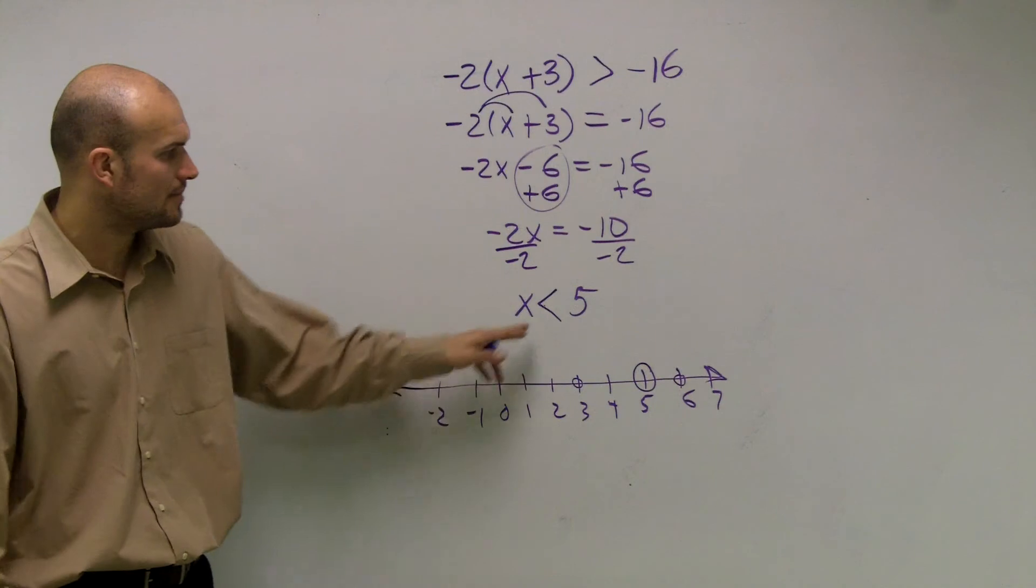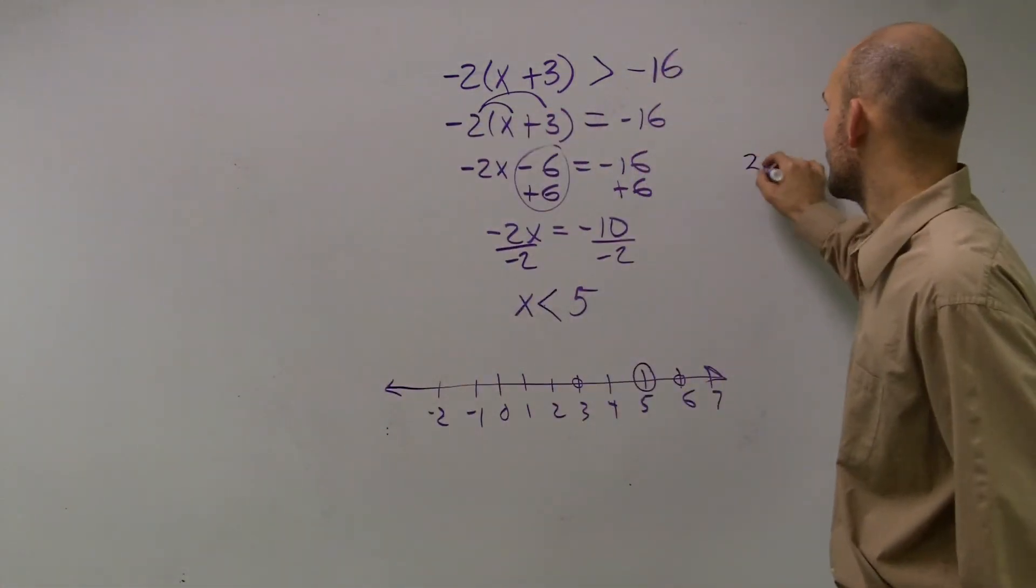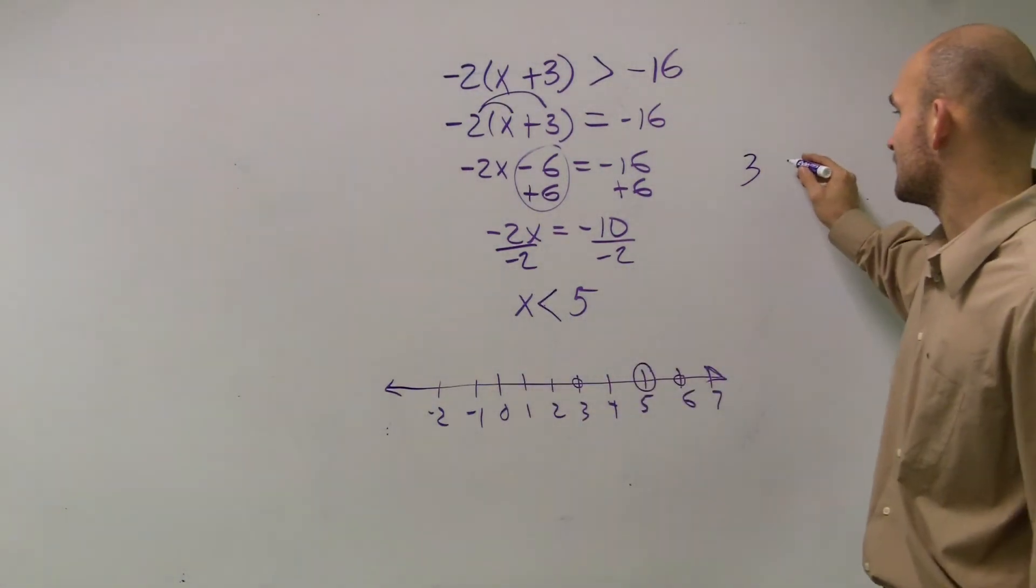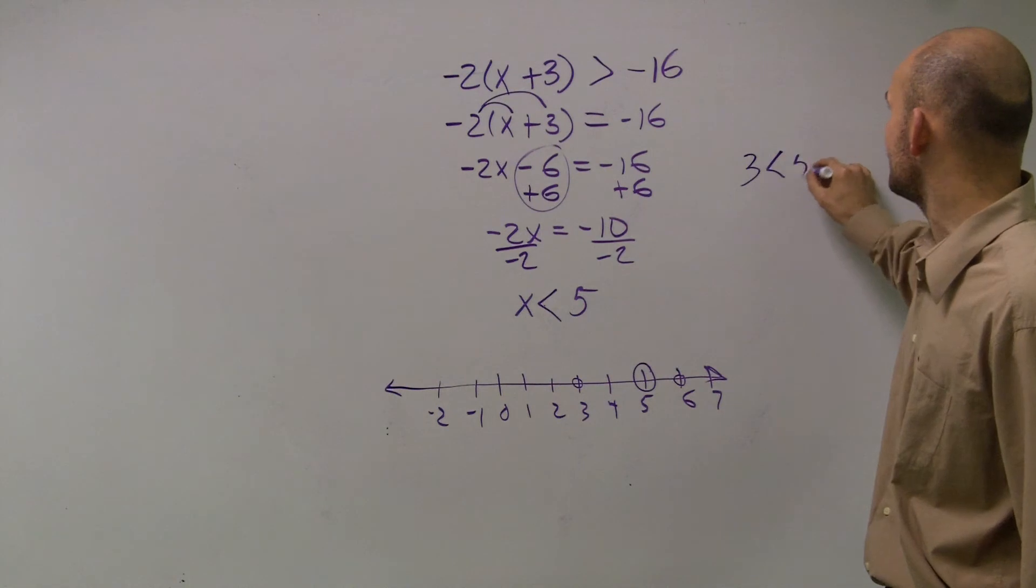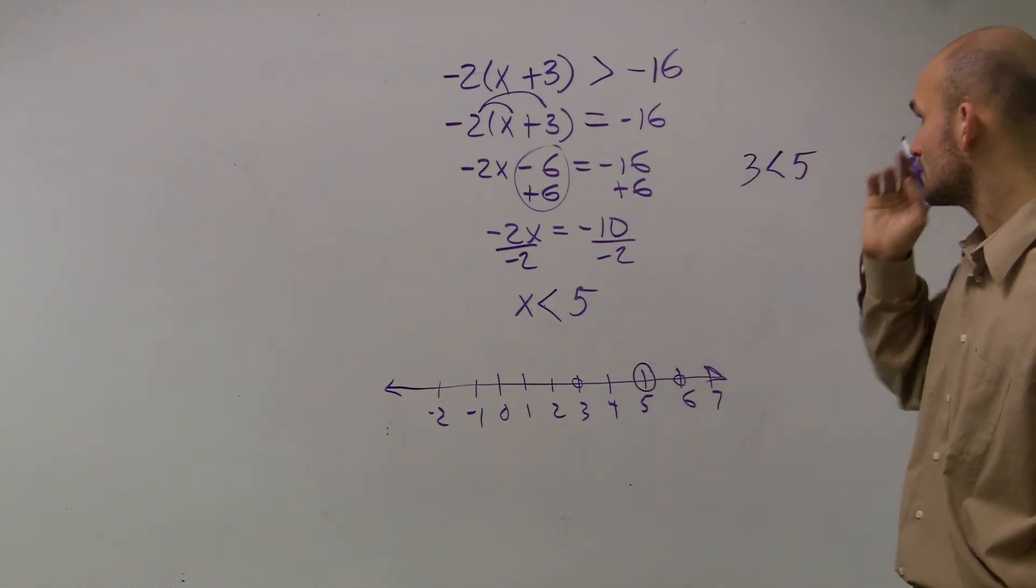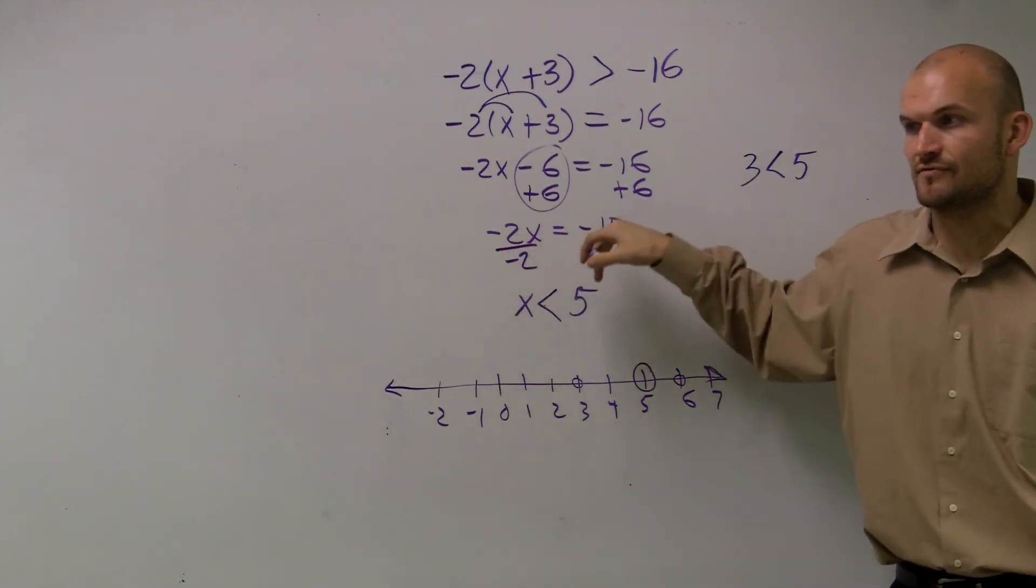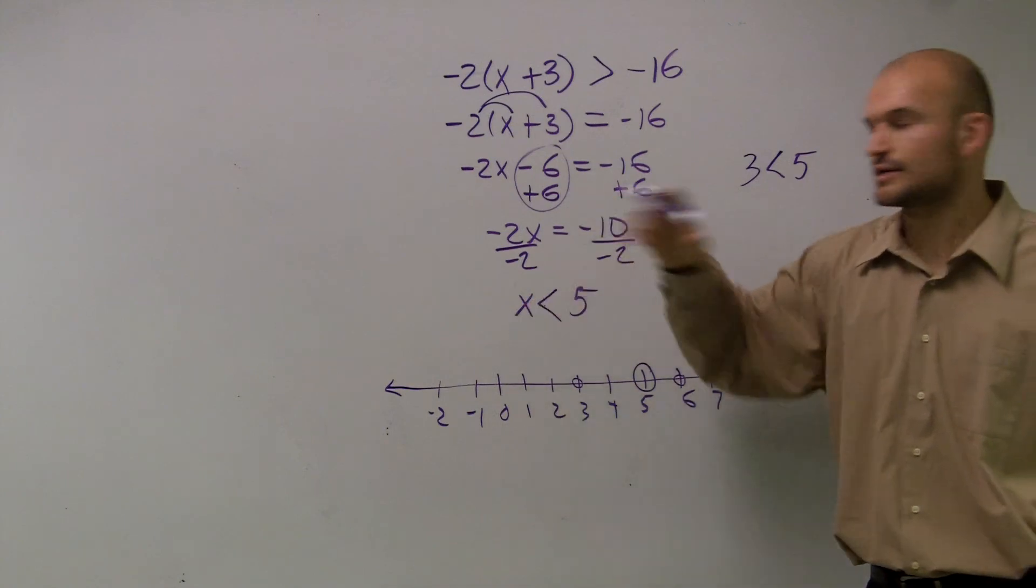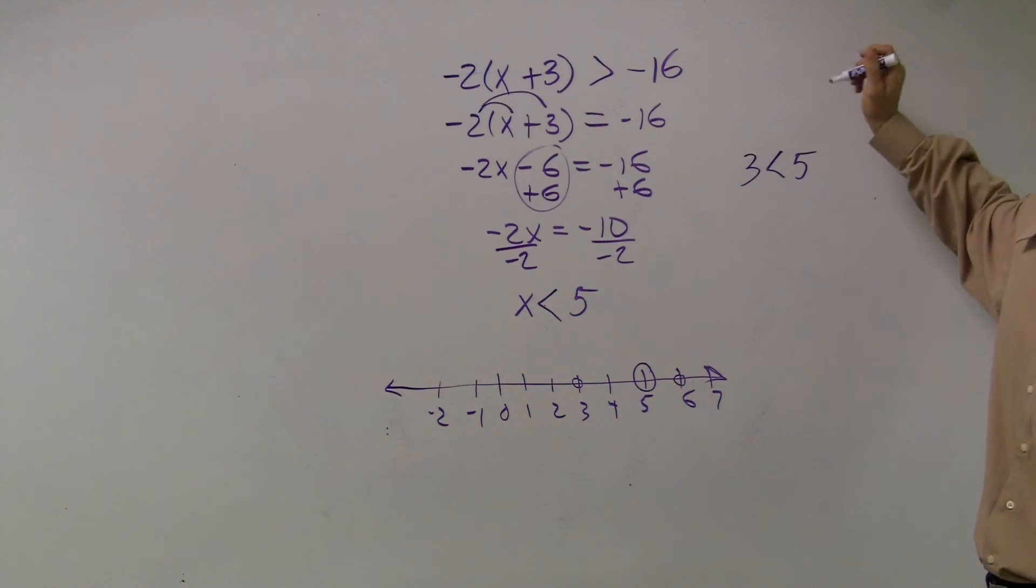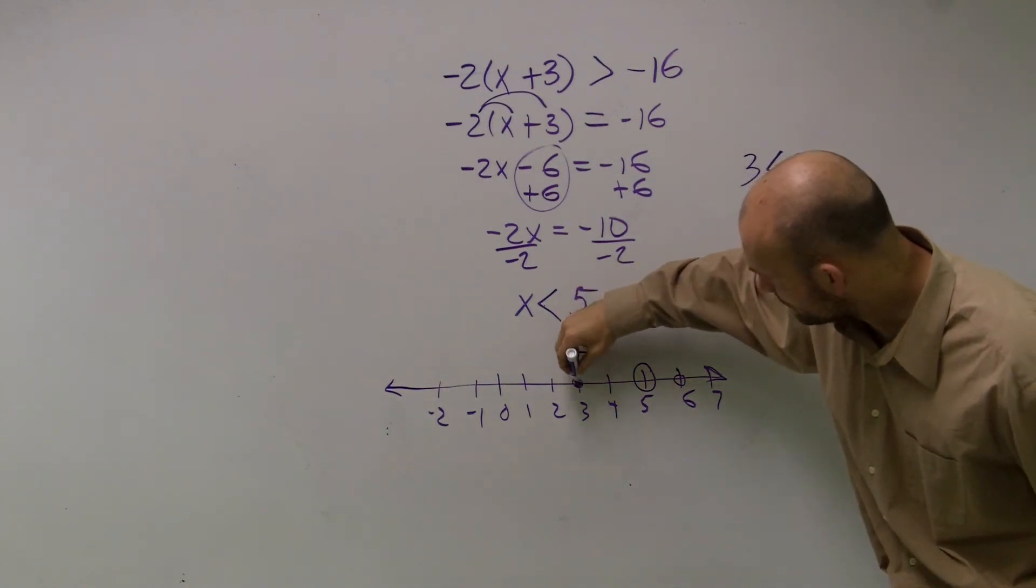Now test these points to see if they work. I chose 3 as my second point. Remember, when you divide or multiply by a negative number, you flip the sign. So is 3 less than 5? True, right? So we shade in that dot.